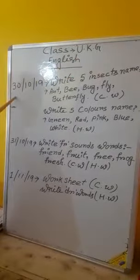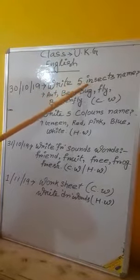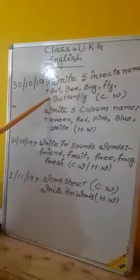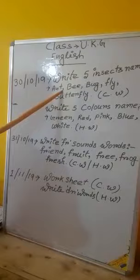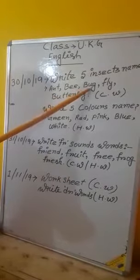Subject English, 30 October 2019. Write 5 insect names. Like Ant: A, N, T - Ant. Bee: B, E, E - Bee. Bug: B, U, G - Bug.